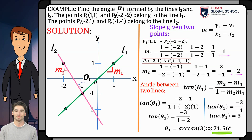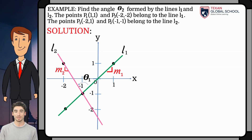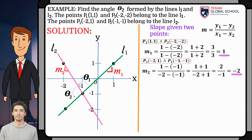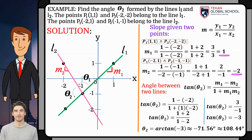If we want to obtain the other angle of two lines theta2, use the other derived formula. Given the same slopes, now the initial line is l2 and its final line is l1. Substituting the calculated slopes, we get tangent of theta2 equals -3. Solving for the arctangent of -3 gives -71.56 degrees. This sign indicates that it is the supplementary. Therefore, the theta2 angle is 180 minus 71.56, which is an angle of 108.44 degrees.